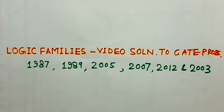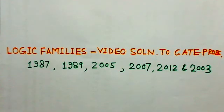The first problem considered here is from 1987. It is on voltage levels permissible in any logic family and how these voltage levels are related with respect to magnitudes.